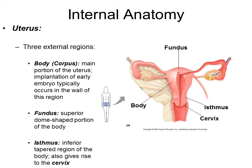With the uterus, in terms of external regions, there are three different areas. The top or superior portion is called the fundus — this is what a midwife or doctor feels for when a woman is pregnant, as it moves up as the pregnancy progresses. The body or corpus is the main part of the uterus. The isthmus is the inferior or bottommost area that gives rise to the cervix.